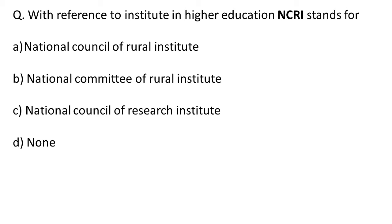With reference to Institutes in Higher Education, NCRI stands for. This is important — let's see the options: A: National Council of Rural Institute, B: National Committee of Rural Institute, C: National Council of Research Institute, and D: None. We generally tend to go for 'Research,' but this is not National Council of Research Institute. It is National Council of Rural Institute, and its headquarter is in Hyderabad. So the correct option is A: National Council of Rural Institute.